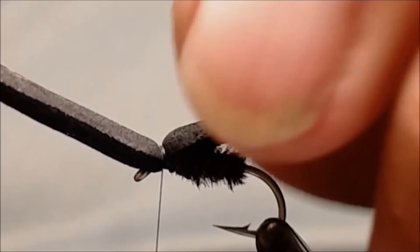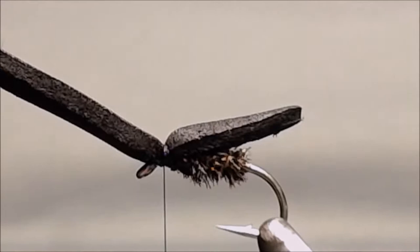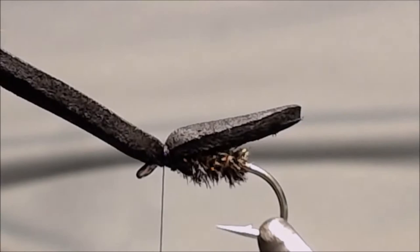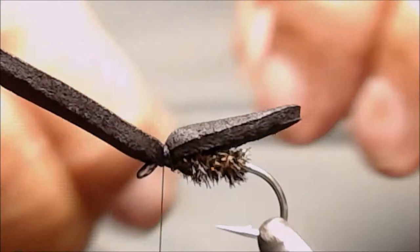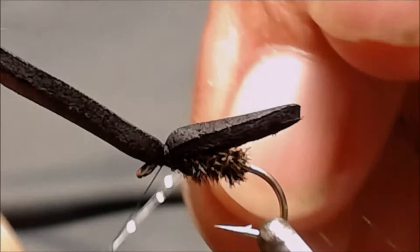For the underwing we're going to be using some crystal flash. We'll double it over and use maybe three or four strands, then tie our crystal flash in.